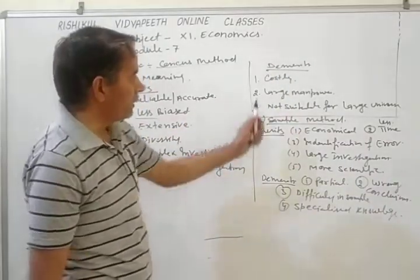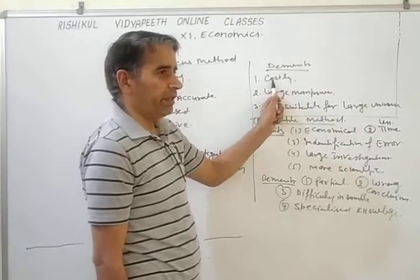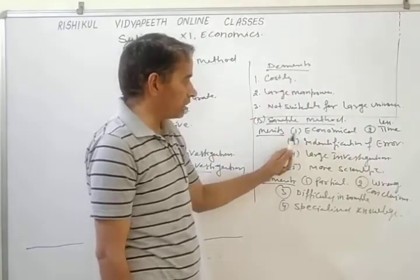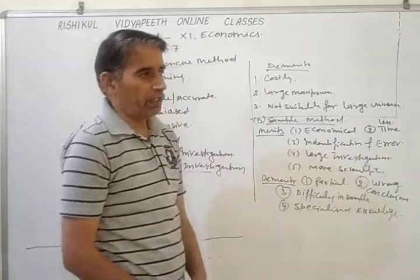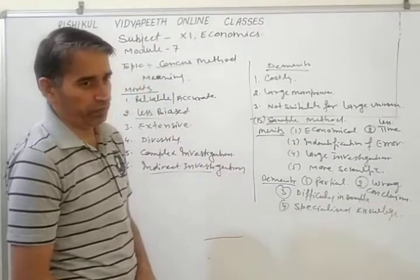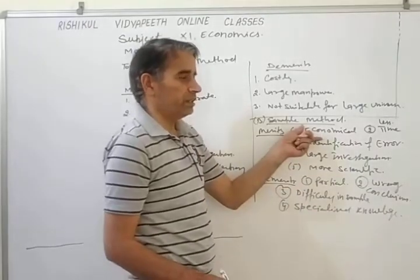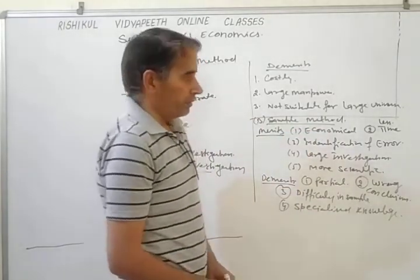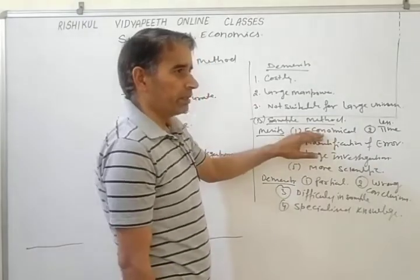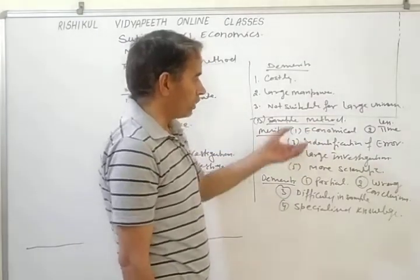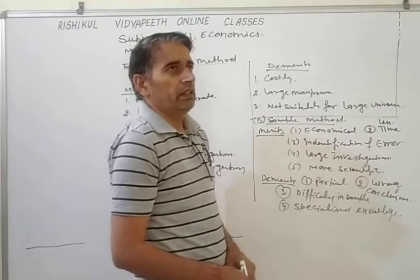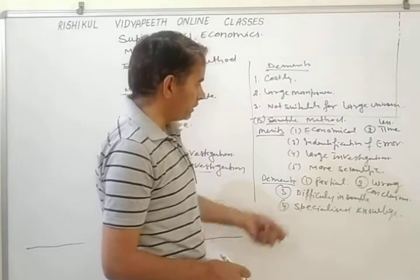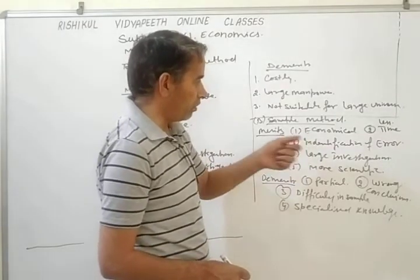The first merit is economical. Under the demerits of census method we said it is costly, but here in the merits of sample method it is economical, meaning less costly. Under this method we select only some items or units from the given population or universe, so to count those items less time and less money is required. So this is an economical method.